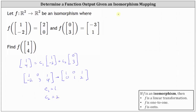So we now know that the vector (1, 4) equals 1 times the vector (1, -2) plus 2 times the vector (0, 3). We can quickly check this: 1 times 1 plus 2 times 0 is 1, and 1 times -2 plus 2 times 3 is positive 4. Now, because we're looking for F of the vector (1, 4), we will take F of both sides of the equation.